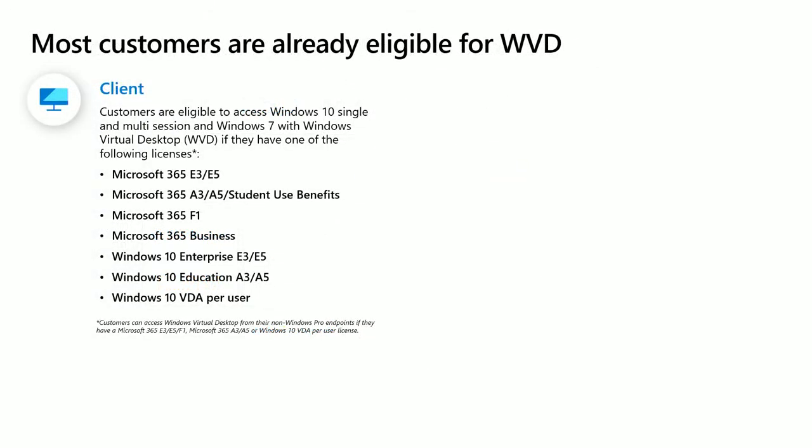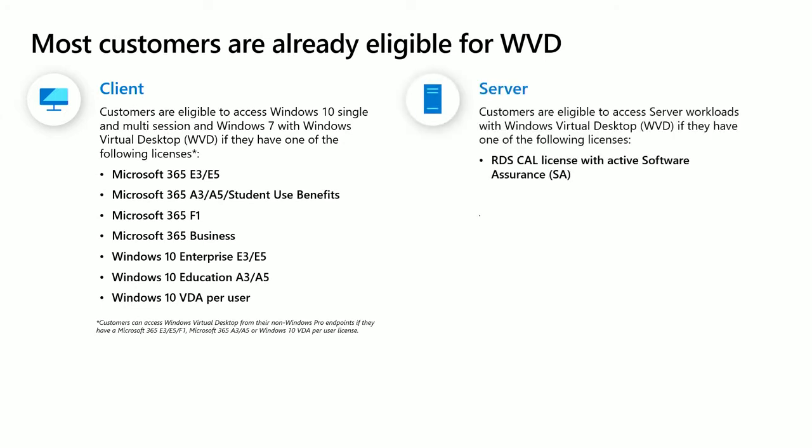Something often asked is how do you get it. Great news—most of you already have it. If you're virtualizing Windows 10 today, you already likely have one of these licenses and it's already included. Whether it's Windows 10 or Microsoft 365 E3 and above—that includes education—or if you're virtualizing Windows Server and Remote Desktop Services, you can use your RDS Cal with SA. Bring what you already have and virtualize it on the cloud with Windows Virtual Desktop.